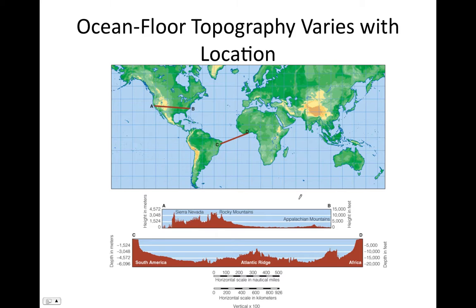The bathymetry of the seafloor can vary fairly dramatically, just like elevation on the continents. If we look at an elevation profile across the North American continent from point A to point B, we see significant variation going from the coast, the Sierra Nevadas, the Rocky Mountains, the Great Plains, the Appalachian Mountains, and back to the coast. And we can see a lot of variation along the seafloor too. Looking at a profile from C to D, leaving the South American continent and going to the ocean floor, we see a big structure — the mid-Atlantic ridge — running down through the center of the Atlantic Ocean Basin, before going back up to the African continent.